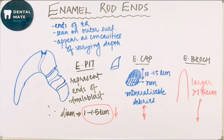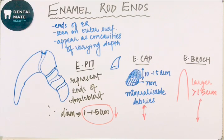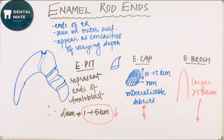This is it about the enamel rod ends, which are a surface structure of the enamel. In the coming videos, we will be discussing about enamel cuticle. Do not forget to like, share and subscribe to my channel. Hit the bell icon if you don't want to miss the latest updates, and do let me know in the comment section below if this video has helped you in any way, as this would boost me to make videos of even better versions for you all. Stay tuned and keep visiting. Thank you.